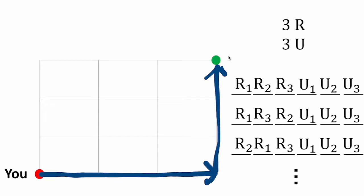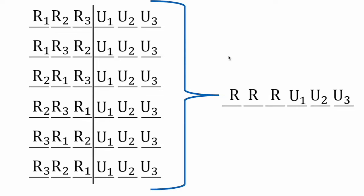How do we account for these additional paths? For a given arrangement, assuming the up moves don't change, how many permutations of the three right moves do we have? Well, that would just be the number of ways to permute the three R's, which is just three factorial, which is six. To condense these six paths into one, we simply divide by the number of ways that R can be arranged: six divided by three factorial, which is six divided by six, which equals one. These six paths refer to the same identical one path and are hence counted as one.